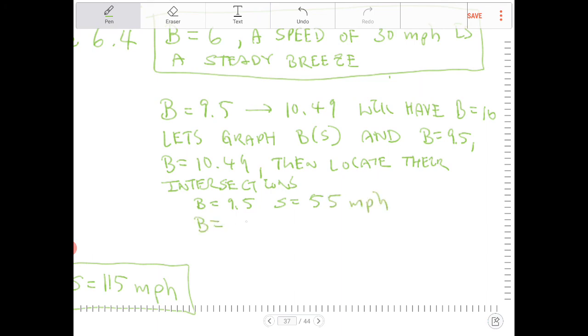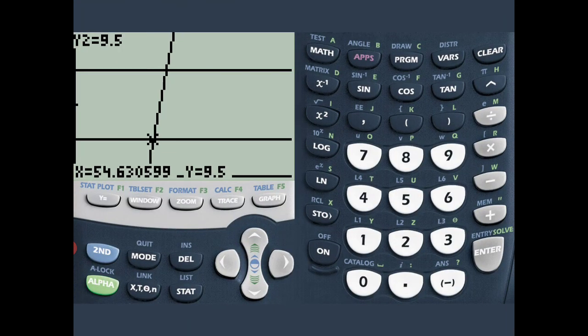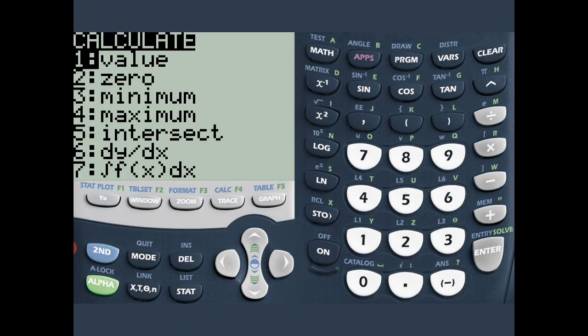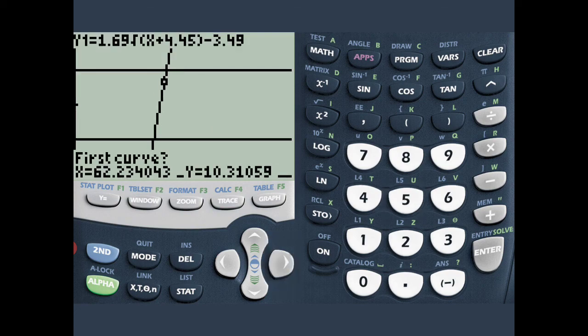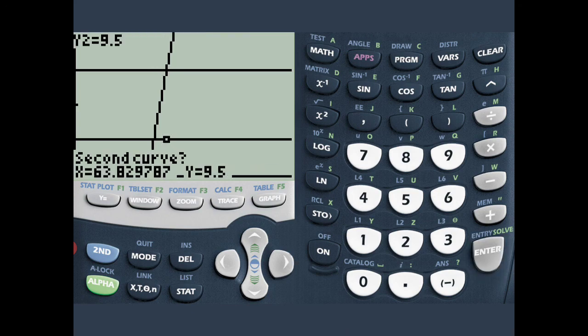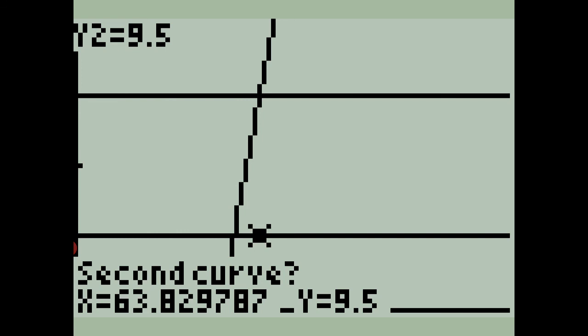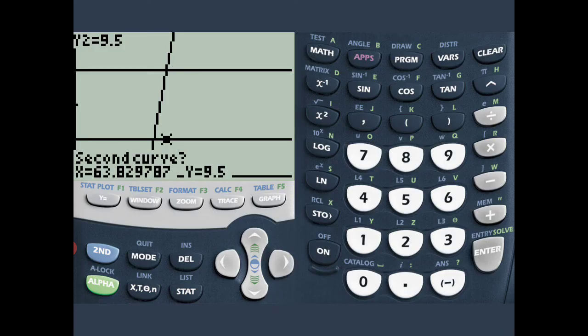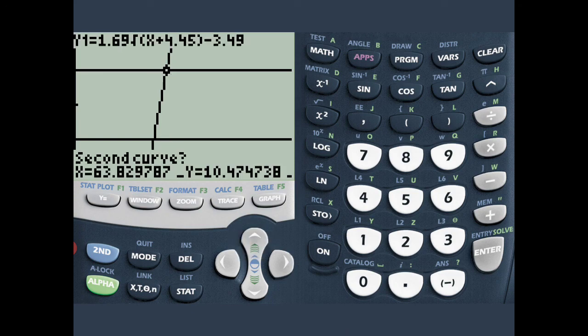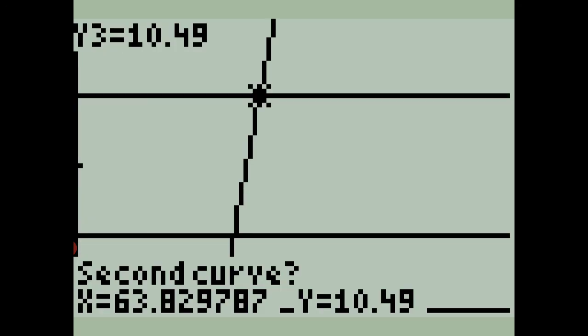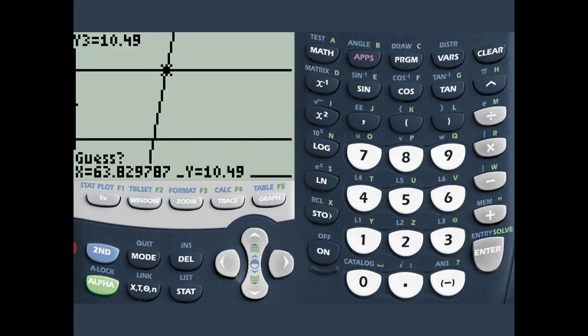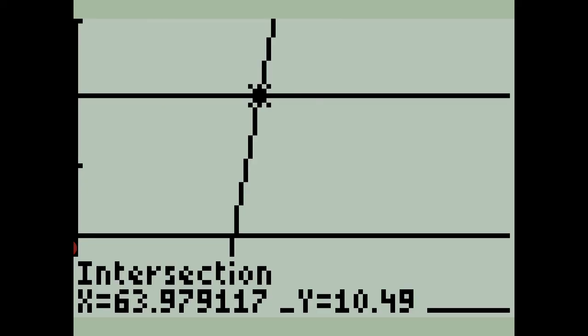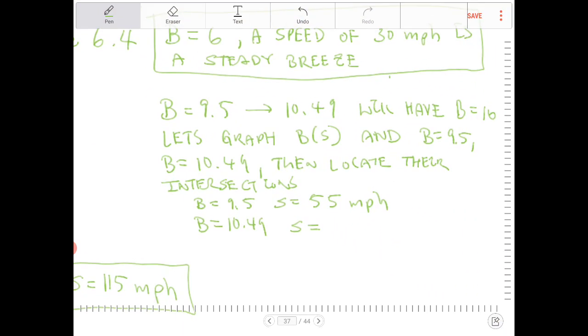For B equals to 10.49, I'm going to figure that out right now. I'm going to go back over here. We're going to do it again. We're going to press 2nd, trace. Go to option 5. And I'm going to move the cursor to where I believe the intersection happens. And notice at the top of the screen, it says Y2 is equal to 9.5. I don't want to find the intersection between the Beaufort function and 9.5. I want it to find the intersection at 10.49. So I'm going to press up arrow. So now it says Y3 is 10.49. I want to press enter again. And one more time. So the wind speed is going to be rounded to roughly 64.